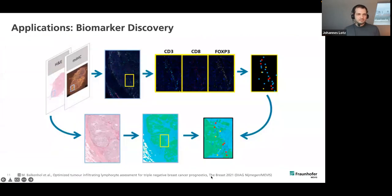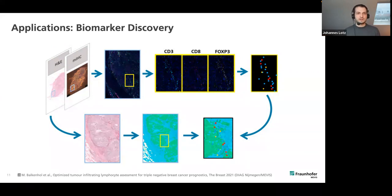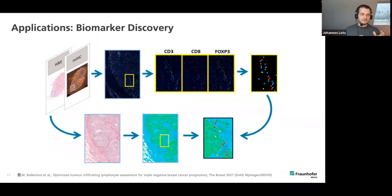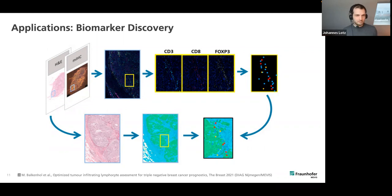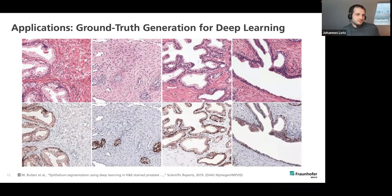The first application I want to highlight is work with Maschenka Balkenhol from the Nijmegen group on the assessment of tumor-infiltrating lymphocytes in breast cancer. The question was: how is the density of specifically stained lymphocytes in certain tissue areas? We need two stains — H&E to determine a tissue region and multiplexed immunohistochemistry to find specific cells — and then correlate these densities with clinical outcome. This is more like a biomarker discovery question.